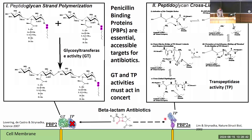The role this complex plays in antibiotic resistance is that beta-lactam antibiotics will inhibit the transpeptidase domain of PBP2 but not that of PBP2A. So under conditions where these antibiotics are present, PBP2A will form a complex with PBP2, thereby rescuing transpeptidase activity and allowing formation of cross-linked peptidoglycan to continue.